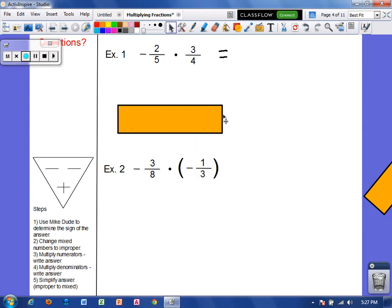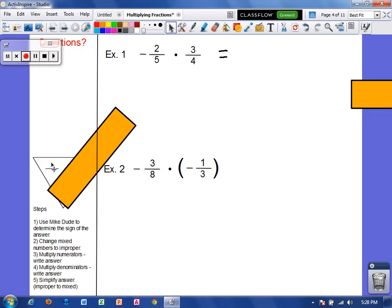Alright. Example one, we've got negative two fifths times three fourths. So the first thing we want to do is use MikeDude. So we have a negative times a positive. So I want to cover up the negative and the positive, and I'm left with a negative. So that means that our answer is going to be negative. Now, we don't need to change to improper. These are not mixed numbers, so we move to step three. Multiply numerators. Two times three, that's six. And denominators, we have five times four, which is 20. This can be reduced by two. Six divided by two is three. Twenty divided by two is ten. So our answer is negative three tenths.